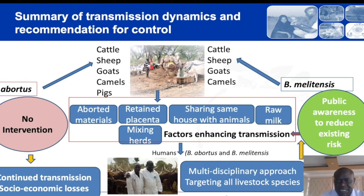Therefore, we recommend a multidisciplinary approach that targets all the different livestock species to help in creating public awareness and contribute to reduction of existing risks such as improper handling and disposal of aborted materials, retained placenta, drinking of raw milk, as well as mixing herds that could perpetuate the transmission of Brucella within the population.